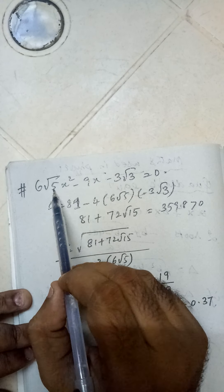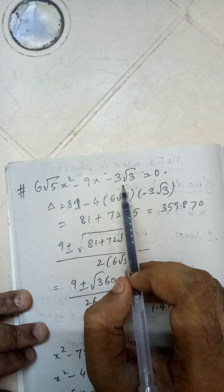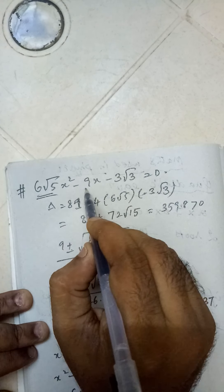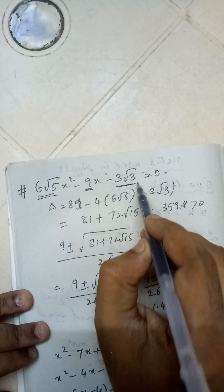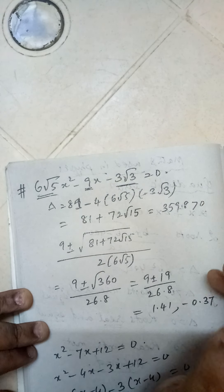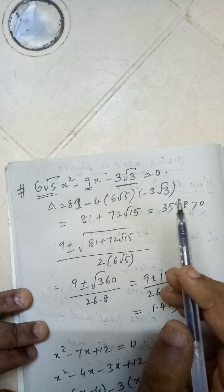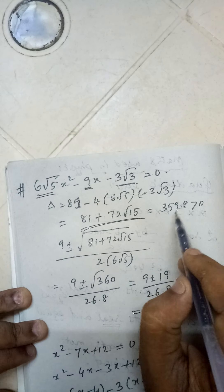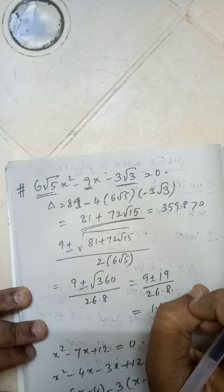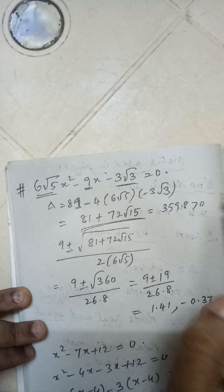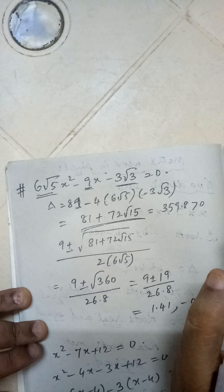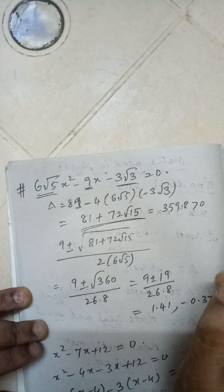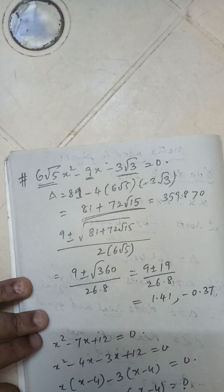Let us see another example: 6√5 x² - 9x - 3√3 = 0. Note, this is my a, this is my b, and this is my c. If you find the Δ value here, putting b² - 4ac, you get this much value which, if you calculate exactly, you get approximately 360.